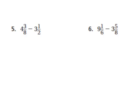Let's look at number five. We have four and three eighths minus three and one half. The first thing I need to do always is find a common denominator. So I have eight and two, and I'm going to find some common multiples.